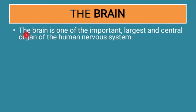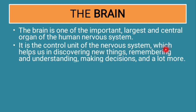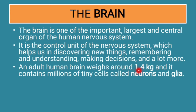The brain is one of the most important, largest, and central organs of the human nervous system. It is like a captain of a team — everything, most decisions are taken by the captain. Similarly, in our body, the brain is the captain of all the organs. It controls all the organs of the body. It is the control unit of the nervous system, which helps us in discovering new things, remembering and understanding, making decisions, and a lot more. An adult human brain weighs around 1.4 kg and it contains millions of tiny cells called neurons and glia.